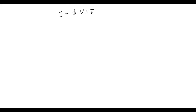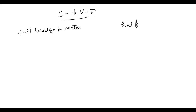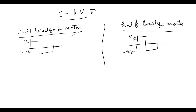Now let's come back to single phase VSI. Here is a full bridge inverter, and here we will talk about a half bridge inverter. The only difference between full bridge and half bridge inverter is that here the maximum value is Vs by 2 and here it is Vs. So if we write the output signal V(t) in Fourier series expansion, for the full bridge we write with n equal to 1, 3, 5 odd harmonics: 4Vs upon nπ sin(nω₀t).